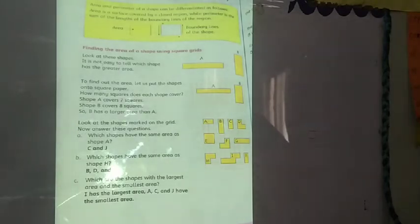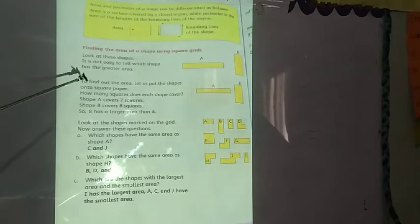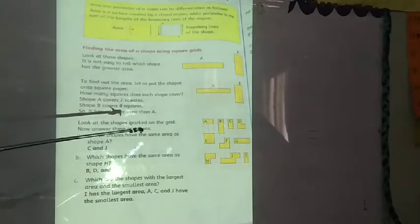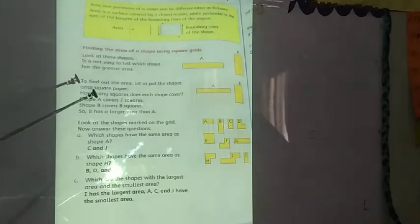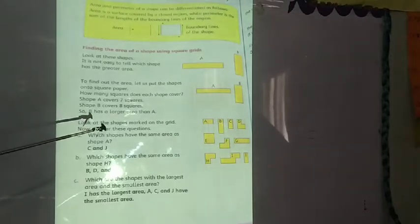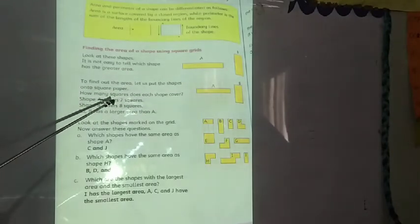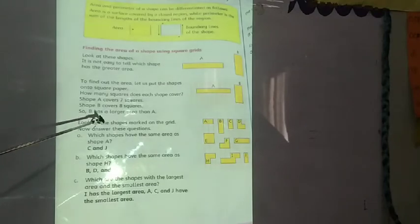Finding the area of a shape using square grids. Here are square grids. We will see the area of shapes and tell which shape is equal and which is greater. Look at these shapes — it is not easy to tell which has a greater area. So let us put the shapes onto square paper. Shape A covers 7 squares and shape B covers 8 squares. So we can see that B has a larger area than A.